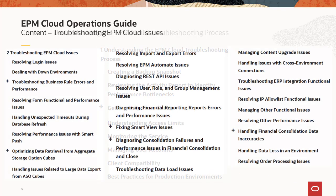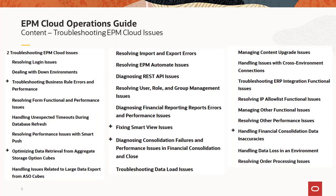After that, the guide goes into three sections related to issues, requests, and questions. For issues, the first part is troubleshooting EPM Cloud issues, and that chapter is divided into multiple sections — as you can see, it is a huge list. For each of these issues, we first talk about how you can resolve it yourself and best practices to prevent those issues from occurring. Then we explain what specific information we need from you if you cannot resolve the issue yourself.